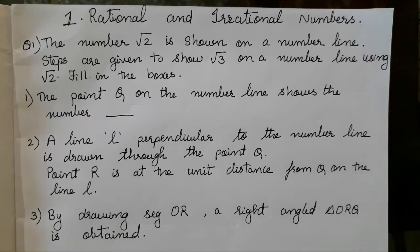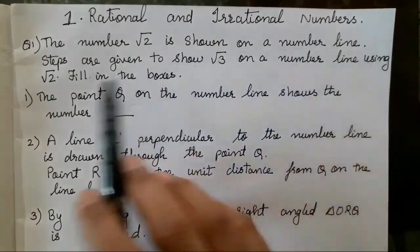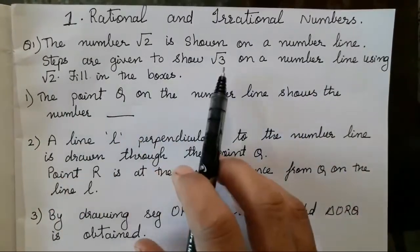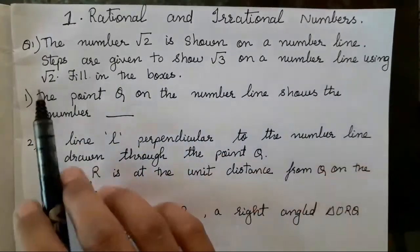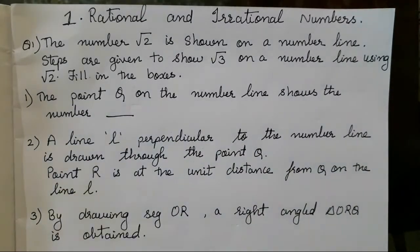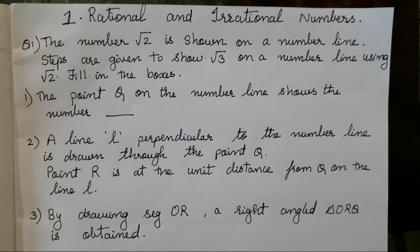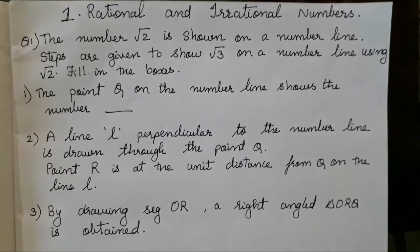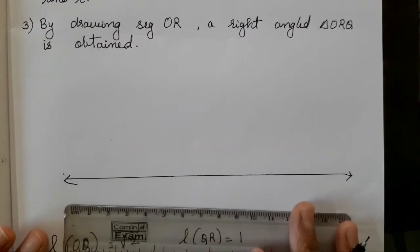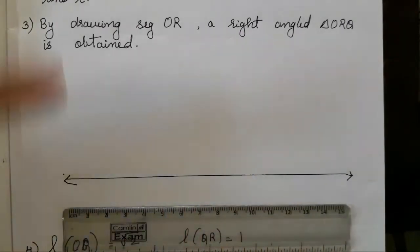Let's start with the first example. The number root 2 is shown on a number line. Steps are given to show root 3 on a number line using root 2 — fill in the boxes. So the first question is in the form of fill in the blanks. Everything has been given, we have to just fill in the blanks. First we will see how to draw a number line, then we will fill in the blanks.